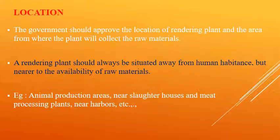Regarding the location of the byproducts or rendering plant: the government should approve the location and the area from where the plant will collect raw materials. A rendering plant should always be situated away from human habitation but nearer to the availability of raw materials — for example, animal production areas, near slaughterhouses, meat processing plants, or near a harbour.